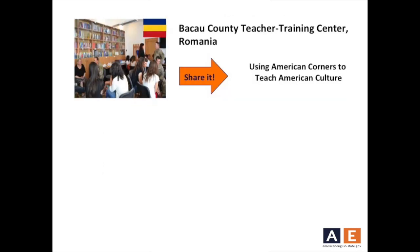Do you want to teach your students about culture through the English language? At the Bacau County Teacher Training Center in Romania, the teachers utilize materials from the American Corner to introduce and engage students in a discussion around American culture. Resources at the center give students the opportunity to discuss issues related to women's struggle for equality, the universal right to vote, democracy and human rights in the U.S., freedom of speech, freedom of religion — the list goes on and on. Can you think of some other interesting cultural topics that you could introduce in your classes?